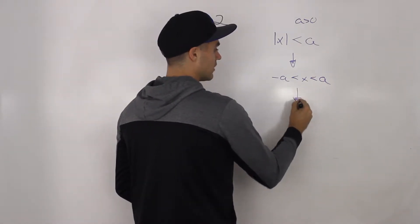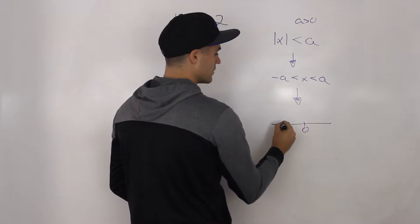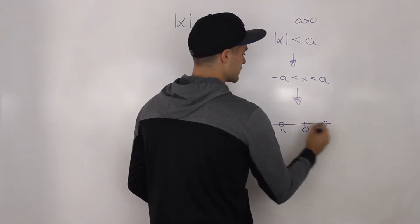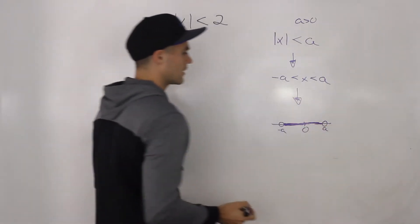The way you show that on a number line is here's 0, we have negative a here and then positive a, and it's all the values between negative a and positive a.